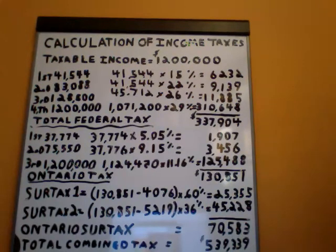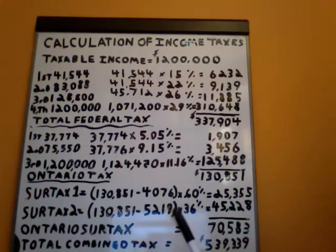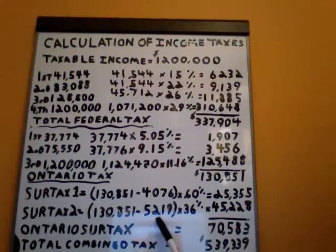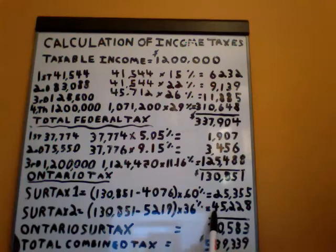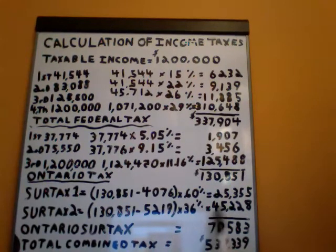Now we have a second surtax to worry about. This one kicks in for income after $78,361. The Ontario surtax that would have been calculated on $78,361 is $5,219. You deduct that from your calculated Ontario tax and multiply the difference by 36%, giving you $45,228. We total the two to give us total Ontario surtax of $70,583.